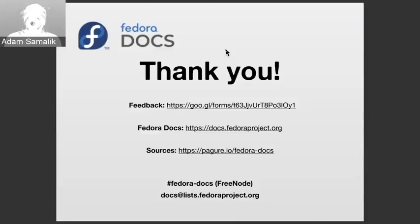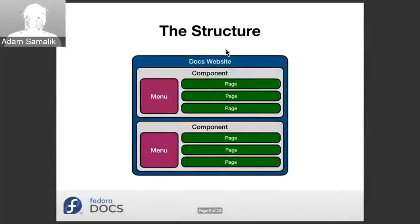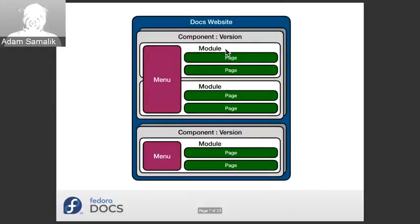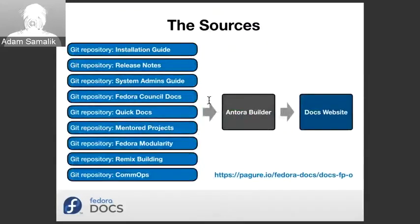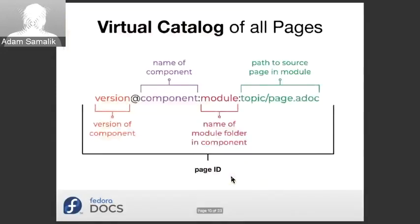For a recap: we saw how the Antora site is structured — there are components which are part of the menu, they have pages. Components have one or multiple modules, which are parts that can be put into separate repos. We know we can build it from multiple sources. There is a template repo you can try for yourself. This is the page ID that Antora makes out of every page, and you can use it for the menu or for local references in any other page in the whole documentation.